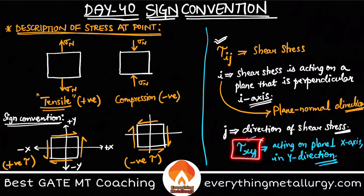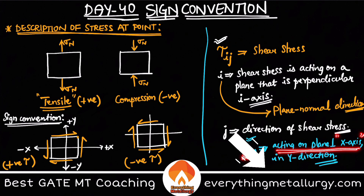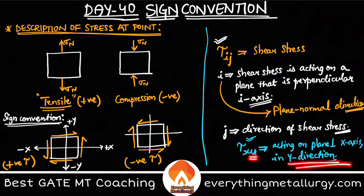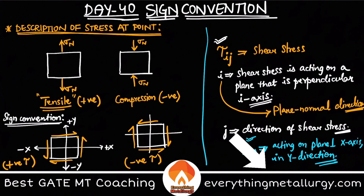The index j is the direction of the shear stress acting on that particular plane. For example, tau_xy is the shear stress acting on a plane perpendicular to the x-axis — so x is the plane normal — and the stress acts in the y-direction on that plane. This is how you describe a shear stress component tau_ij.